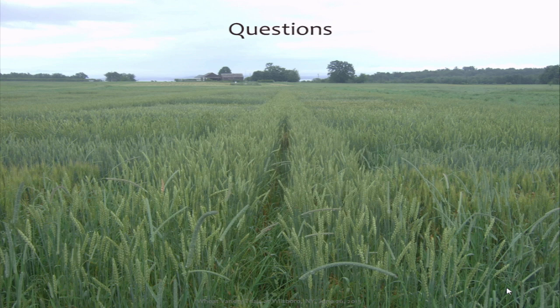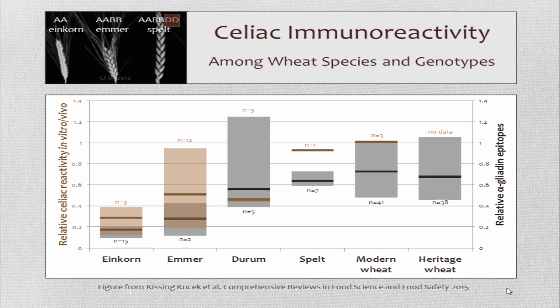I did a review on wheat sensitivity among different species and genotypes. Einkorn is quite promising in terms of celiac disease, having low levels of highly reactive epitopes and low in vitro and in vivo reactivity in people. We also have an einkorn program both on-farm and at the research station, selecting for ease of de-hulling, since einkorn's hull is what makes it difficult to process.